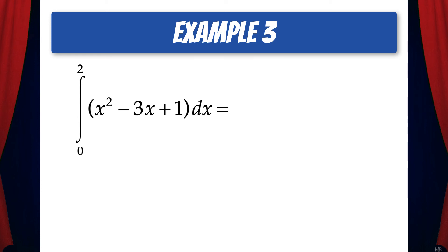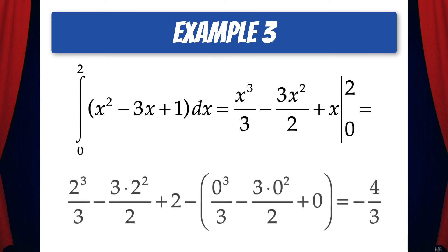Okay, let's try this one. The integral from 0 to 2 of x squared minus 3x plus 1 dx. While the antiderivative is x cubed over 3 minus 3x squared over 2 plus x, and we'll evaluate that from 0 to 2. And when we do this, we get negative 4 thirds.